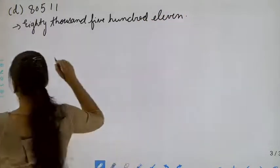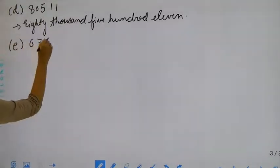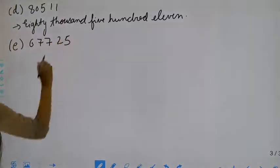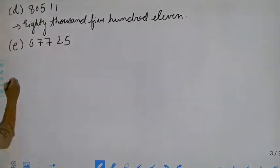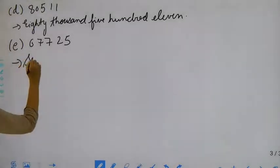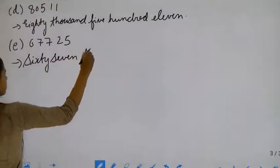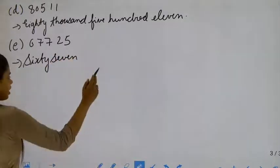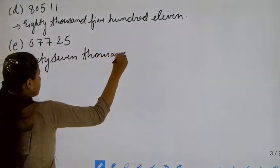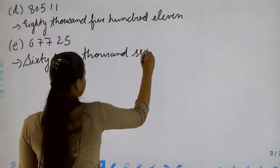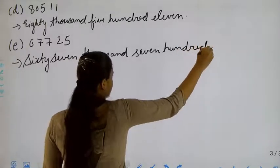Now move to the next part — six, seven, seven, two, five. It will be sixty-seven thousand, seven hundred, twenty-five.